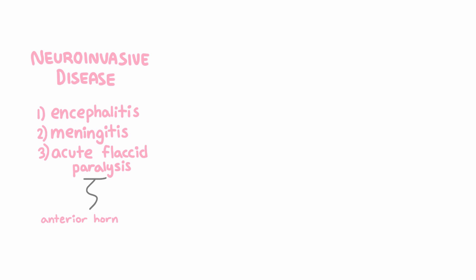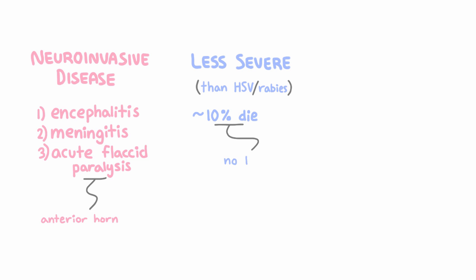Overall, West Nile is less severe than HSV or rabies. Only about 10% of people with West Nile neuroinvasive disease die, even though we don't have any good treatment. And whereas HSV and rabies can basically affect anyone, West Nile tends to cause the most severe disease in people over 50 and people who are immunocompromised.